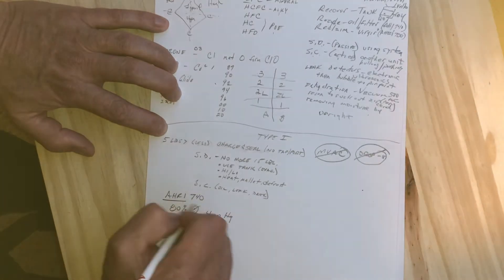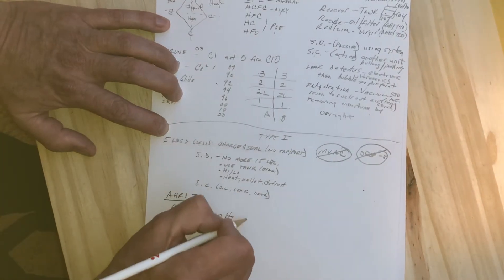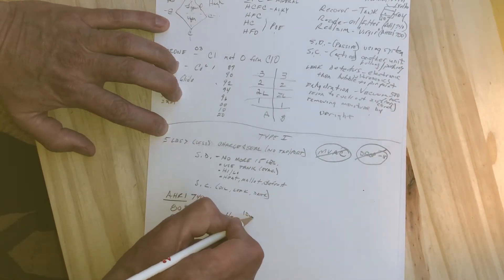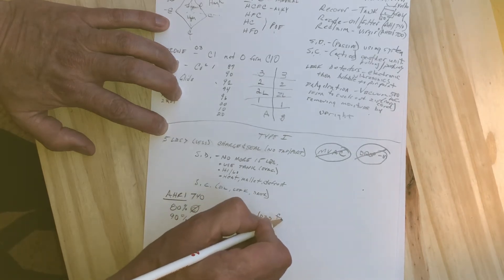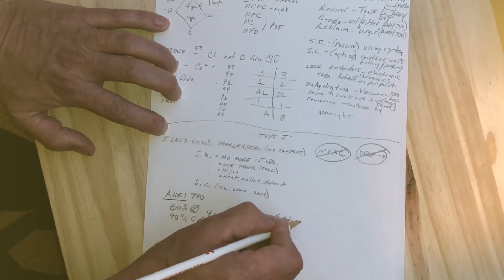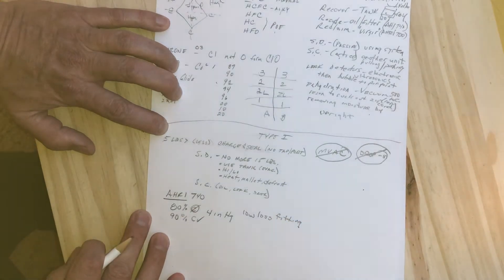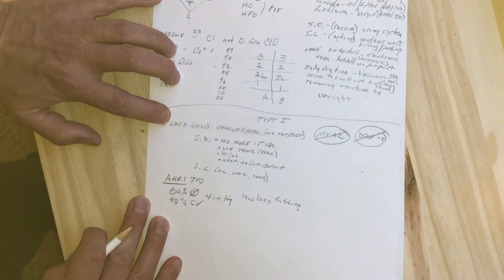According to AHRI 700, when we're putting all this recovery equipment together, we need to use low-loss or self-sealing fittings on our hoses. That's kind of a rule there that you need to know about.